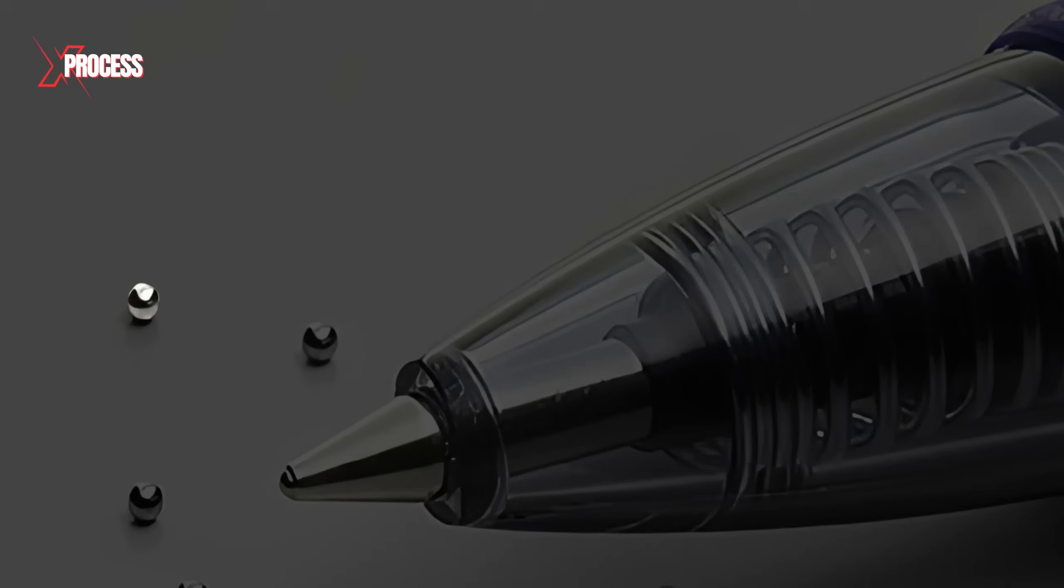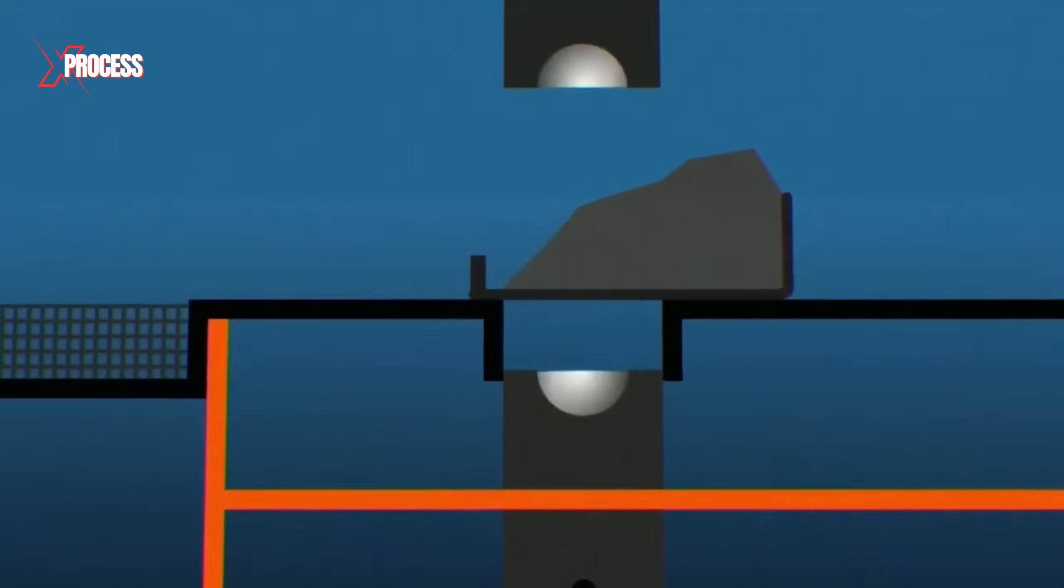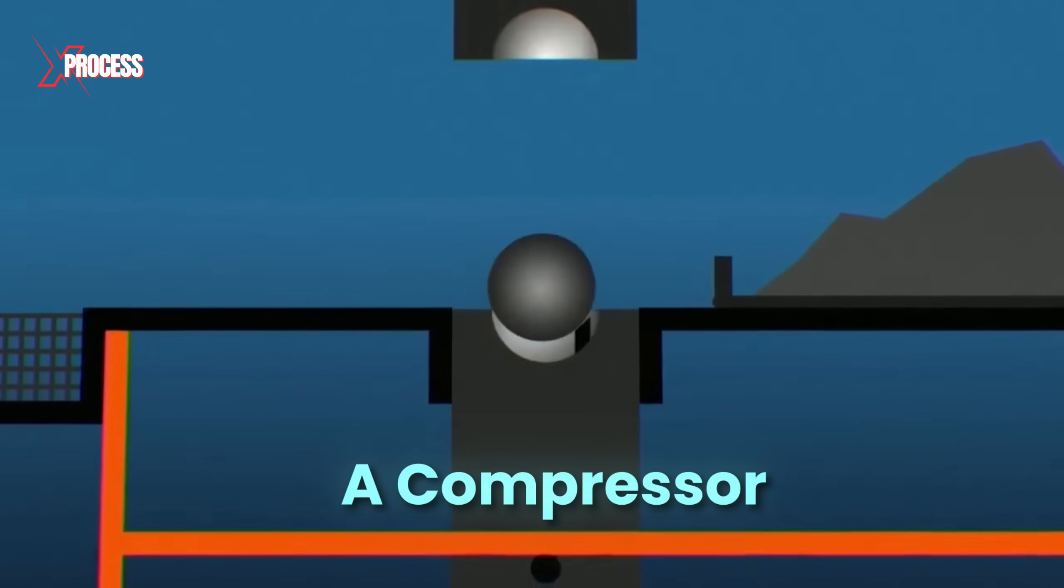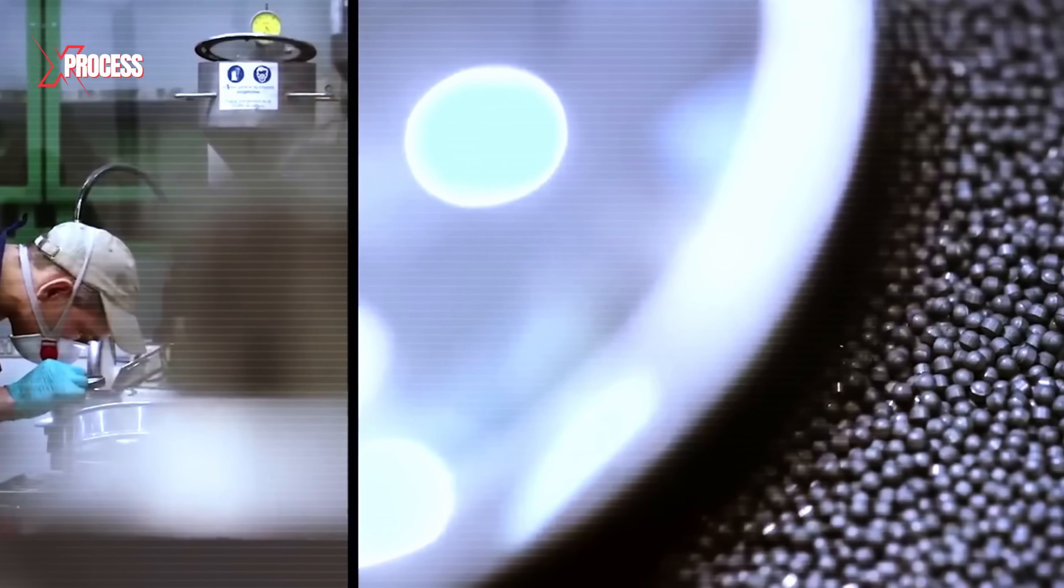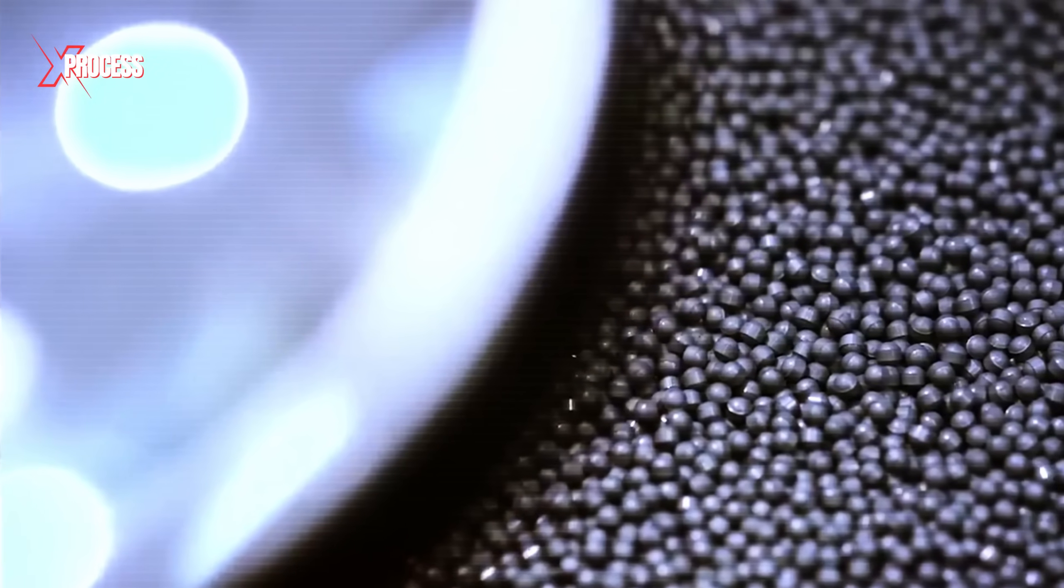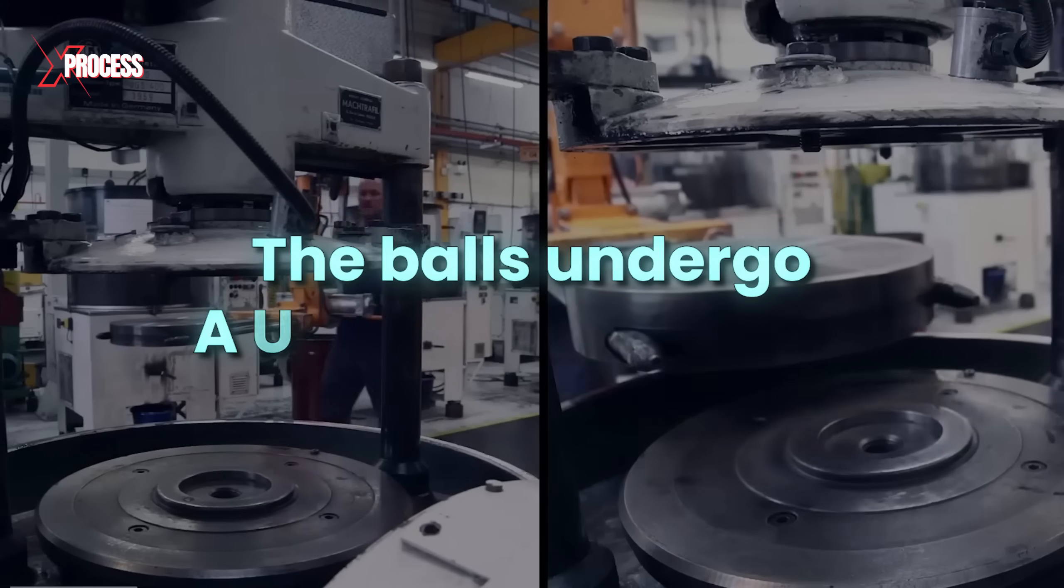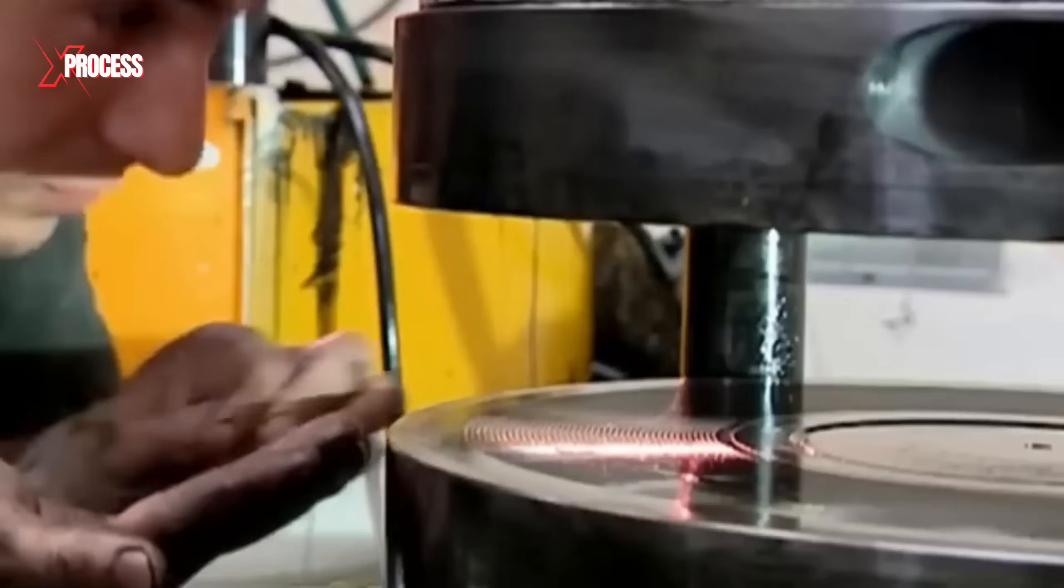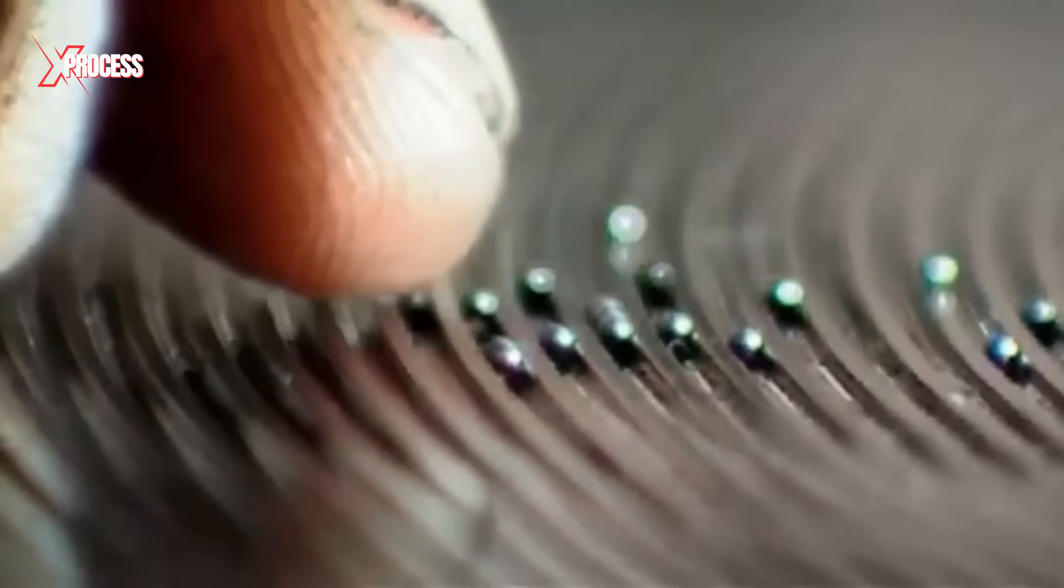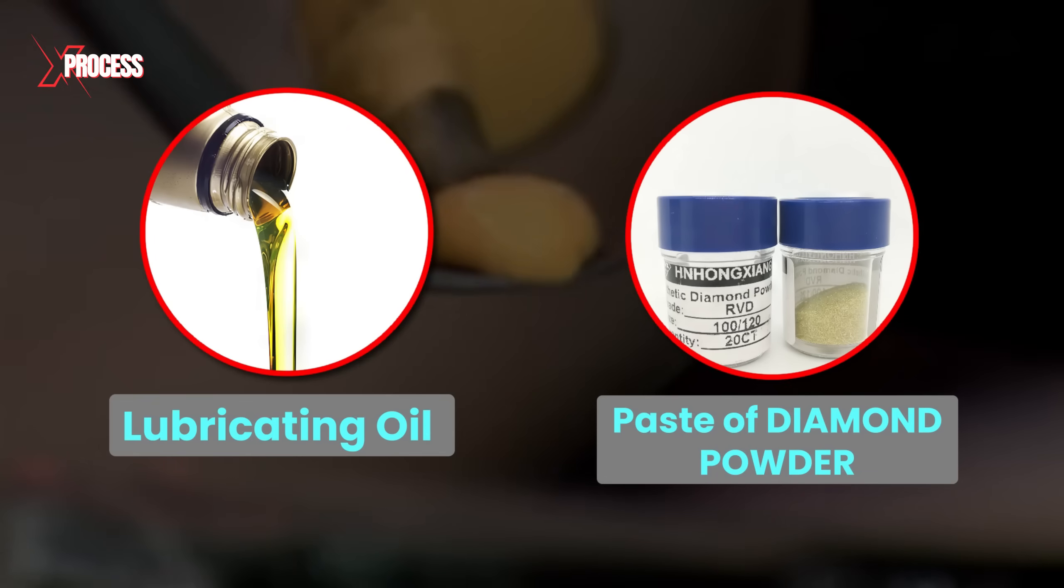The tungsten carbide balls, barely 1 mm in diameter, are manufactured by subjecting a fine powder to heat and enormous pressure in a machine called a compressor. However, despite this rigorous process, the resulting balls are not smooth or perfectly spherical. To attain the required dimensions and geometries, the balls undergo a polishing process. They are placed into a polisher, resembling a rotating drum. Within this drum, the balls are combined with lubricating oil and a paste containing diamond powder.